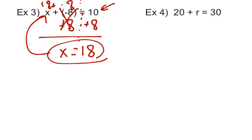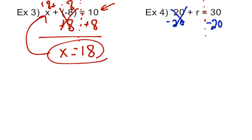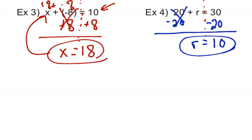Example 4: 20 plus r equals 30. The 20 is with the r, and since there's no negative, the 20 is positive. To get rid of a positive 20, I write down a minus 20, because positive 20 and negative 20 cancel each other out. Since I subtracted 20 from the left, I have to subtract 20 from the right — that's the rule. That leaves r by itself, and positive 30 minus 20 gives me positive 10. R equals 10. Check: 20 plus 10 equals 30. That is correct.